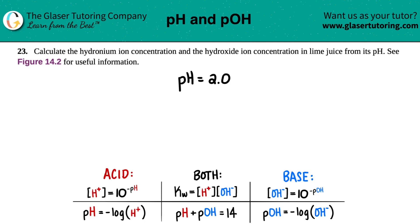Number 23, calculate the hydronium ion concentration and the hydroxide ion concentration in lime juice from its pH and then see figure 14.2 for useful information.